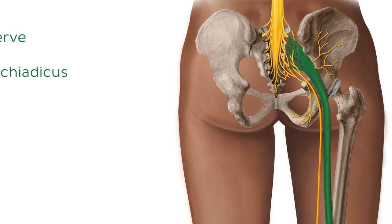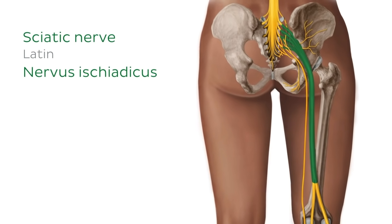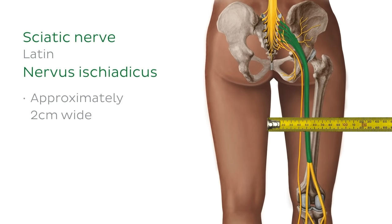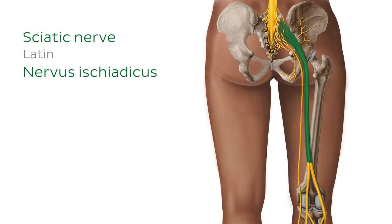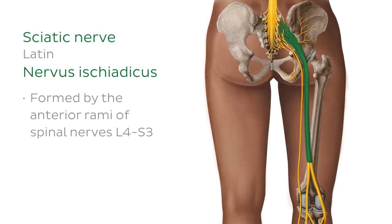Now we can see the sciatic nerve in all its glory. It is approximately 2cm wide and is the longest and thickest nerve in the human body. The sciatic nerve originates from the sacral plexus. Specifically, it is formed by the anterior rami of spinal nerves L4 to S3.